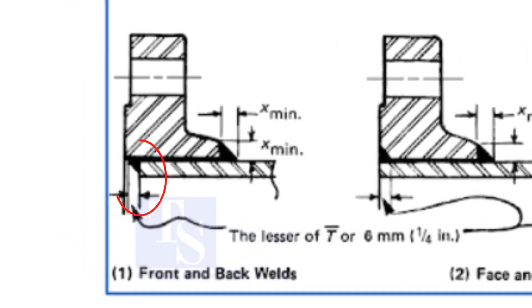In the first method, the flange is overlapping the pipe. The overlap shall be the thickness of the pipe or a minimum 6 mm.